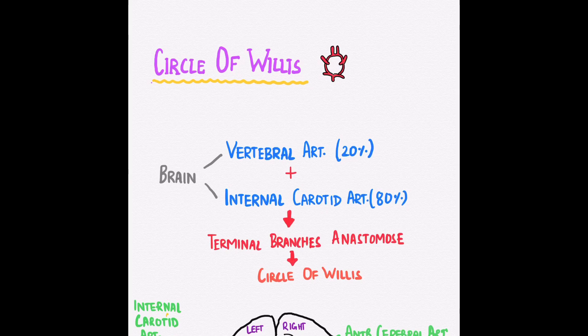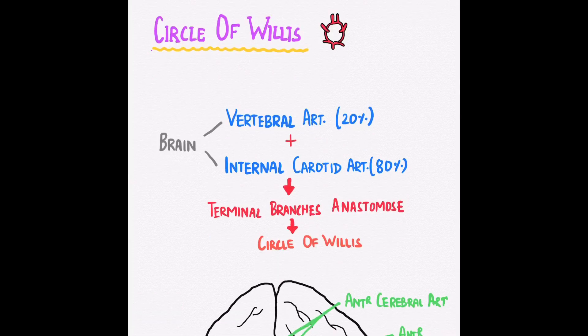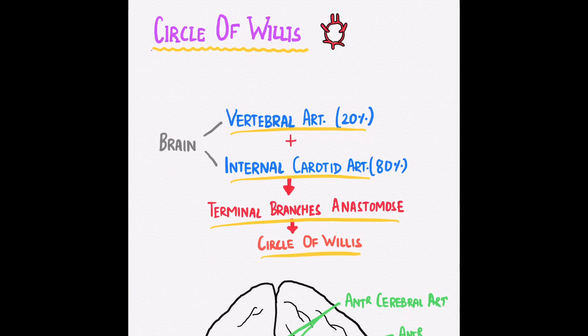Let's begin by talking about its origin. The brain derives its blood supply from mainly two arterial systems: the vertebral arterial system, arising from the first part of the subclavian artery, and the internal carotid arterial system, derived from the common carotid artery. Both arteries arise in the neck and enter into the cranial vault, where their terminal branches form an anastomotic circle known as the Circle of Willis, responsible for blood supply to the cerebrum.